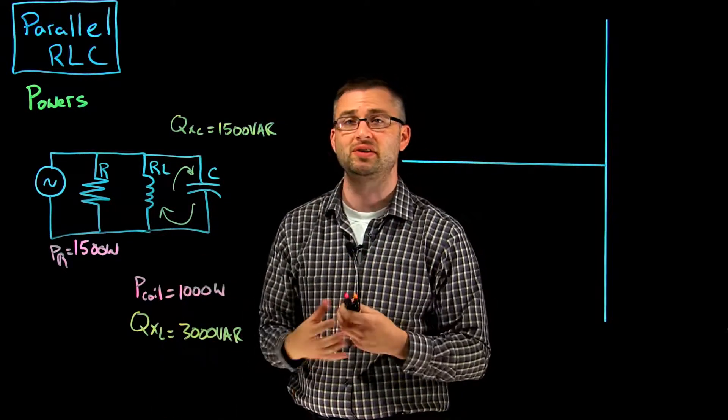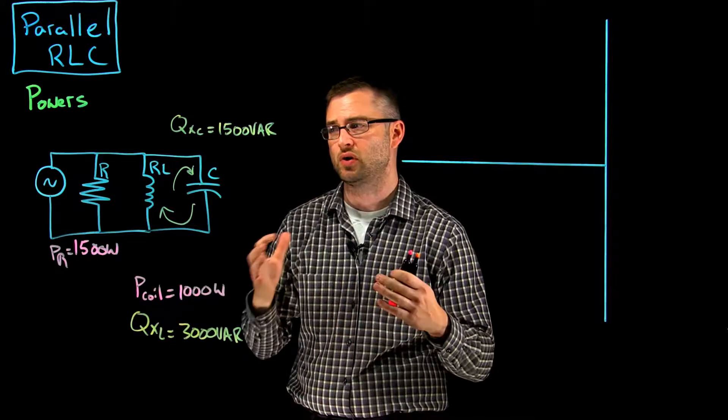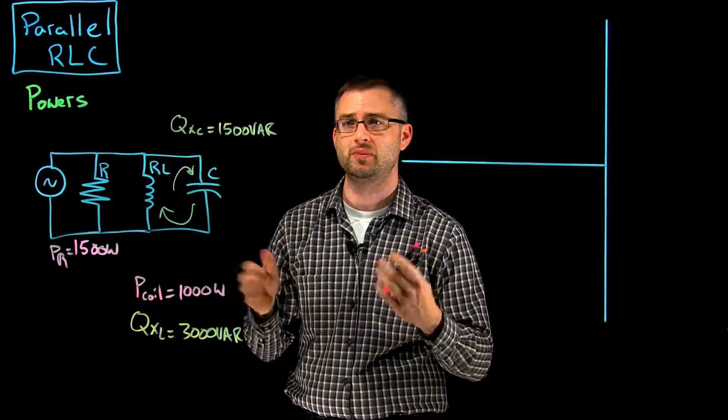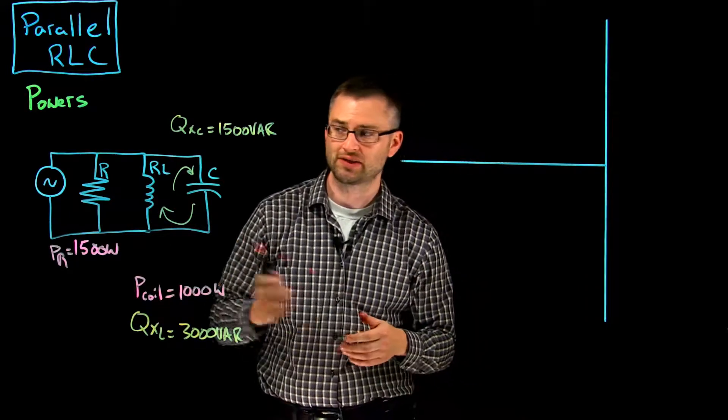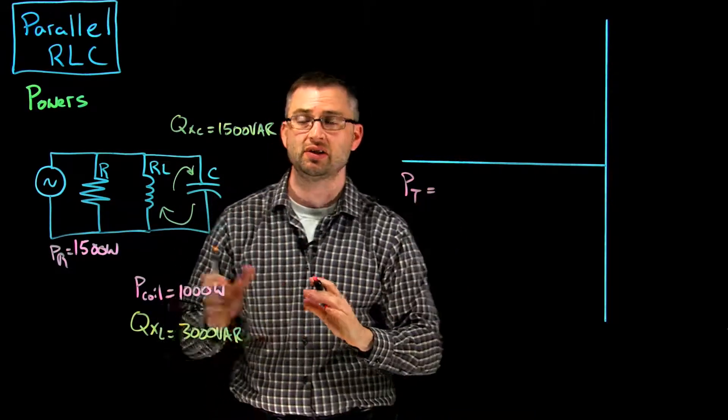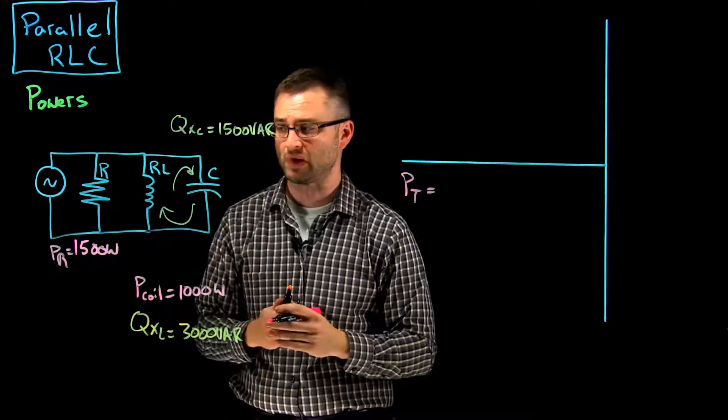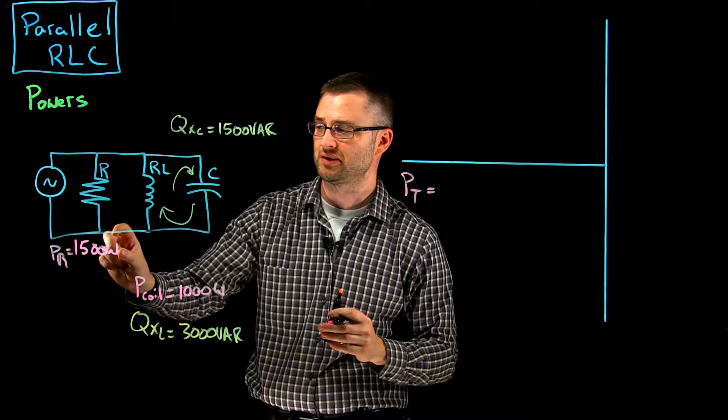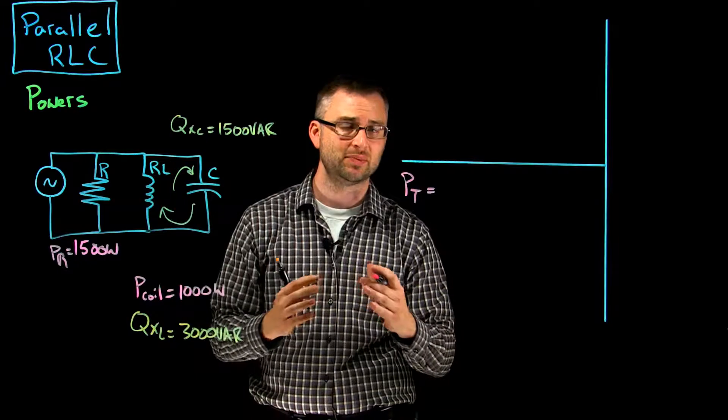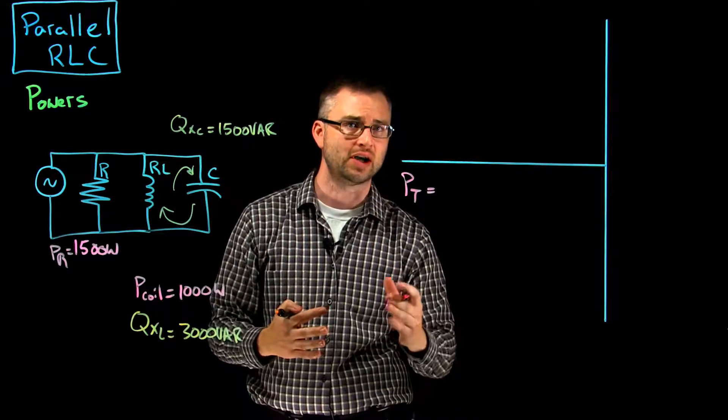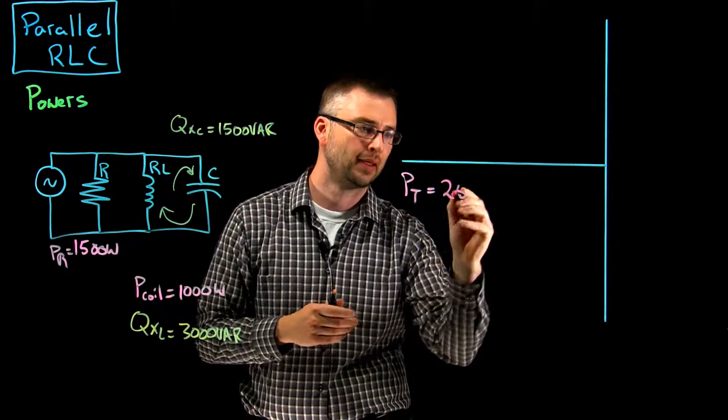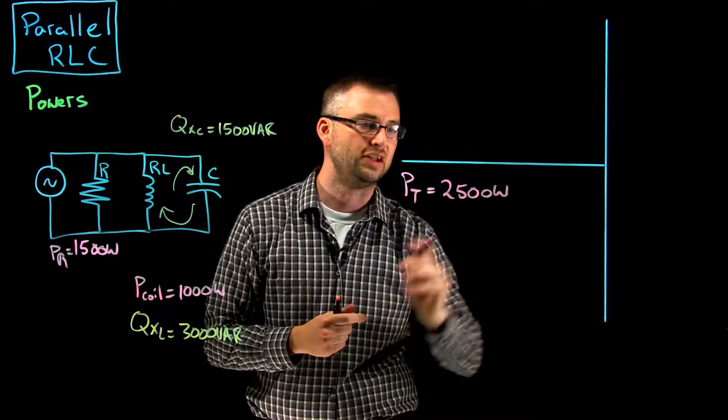That's the power being stored in the electric field. So what we want to do then is mix these three together and see what the total apparent power of that circuit is. Let's start with power total. P total is going to be a combination of all of the watts in the circuit, so we've got to look through each branch: 1500 watts here, 1000 watts in our coil. We need to add those directly up. It doesn't matter if it's series or parallel, if there are watts we can add them directly.